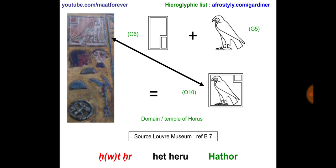The combination of those two gives us the glyph O10, which is Het Heru. You might see it transliterated as Het Heru or Hut Heru — the U sound is transliterated with the letter W. So Het Heru means domain of Horus or Temple of Horus.